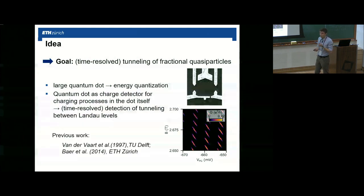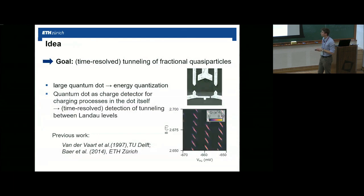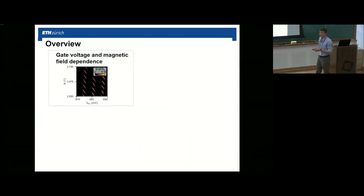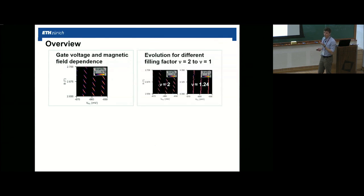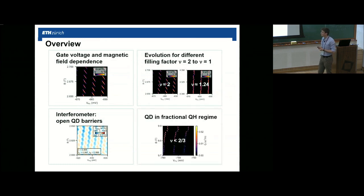This is closely related to previous experiments by Van der Waard et al., and to the cyclic depopulation regime I already mentioned. We will start by looking at conductance through our quantum dot as a function of gate voltage and magnetic field. Once we understand that at a given filling factor, we will look at how it changes going from filling factor 2 towards filling factor 1. Then we can go to an interferometer-like device by opening up our quantum dot barriers, and I will show modified Coulomb peaks in the fractional quantum Hall regime.